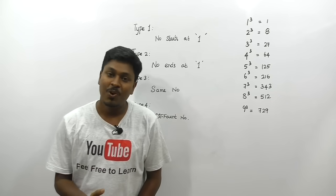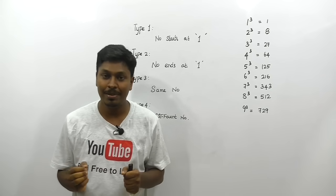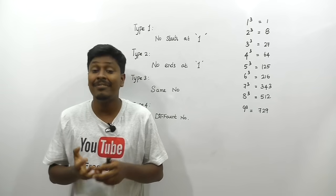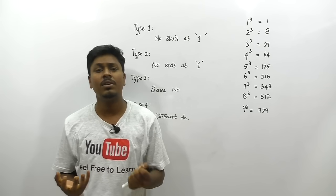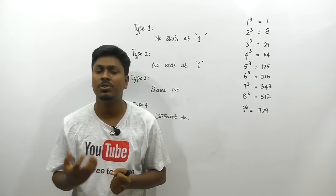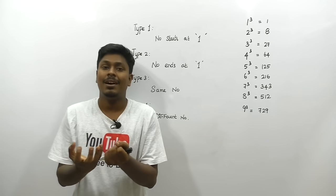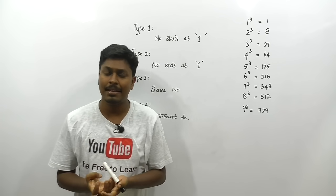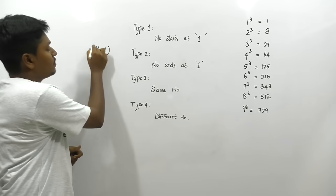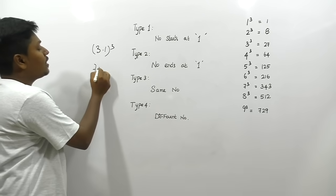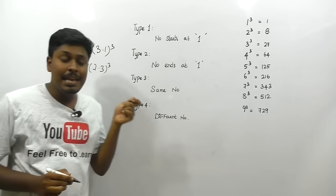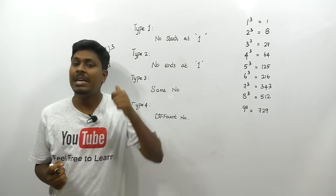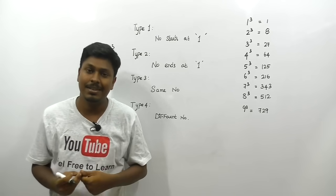Welcome to this video on how to cube a number faster. Most students preparing for bank exams have learned shortcuts for squares, square roots, and cube roots, but many don't know how to cube a number quickly. In bank exams, questions like 3.1 cubed or 7.3 cubed appear repeatedly in simplification and approximation sections, so we need to calculate these cubes a little bit faster.